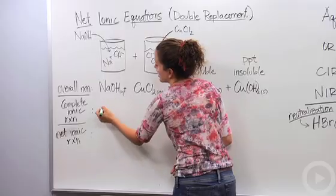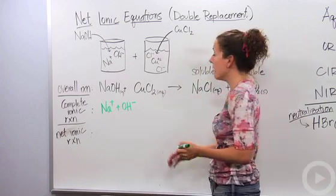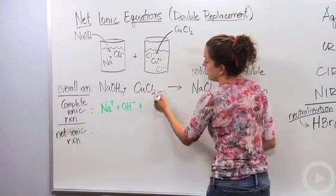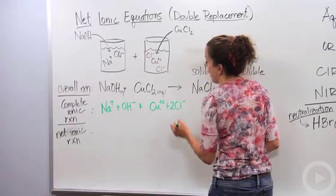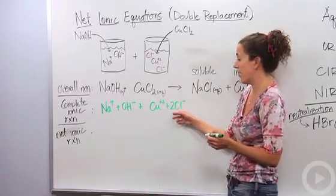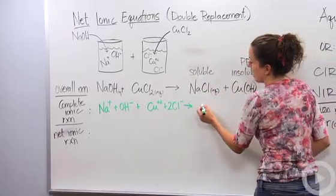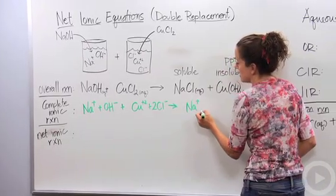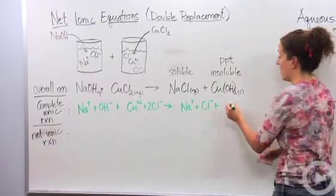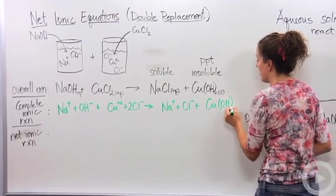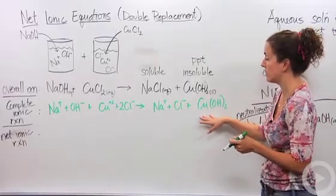Instead of writing NaOH, I'm going to write Na⁺ and OH⁻. Then I'm going to break CuCl₂ up into its ions too because it's in aqueous solution — Cu²⁺ plus two chloride ions. It's going to produce NaCl, which is soluble and aqueous, broken up into Na⁺ plus Cl⁻. And Cu(OH)₂ is a solid so it stays together. I actually need to go back and balance the original equation properly.